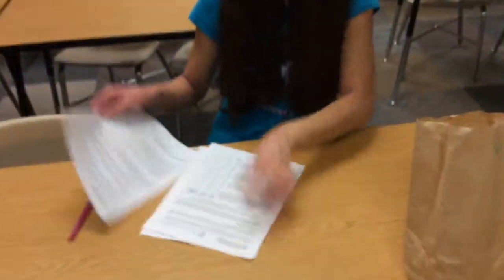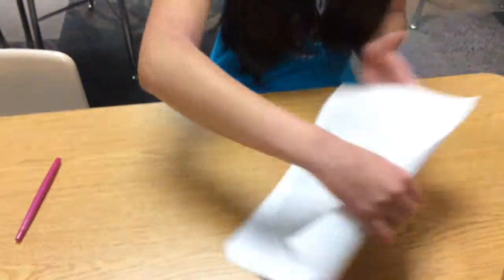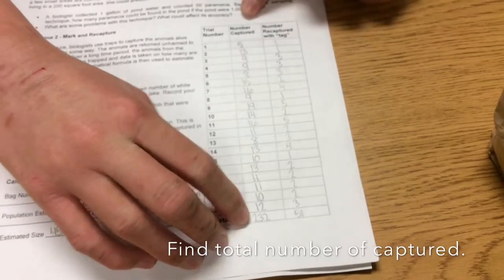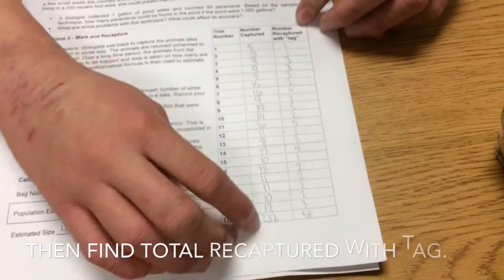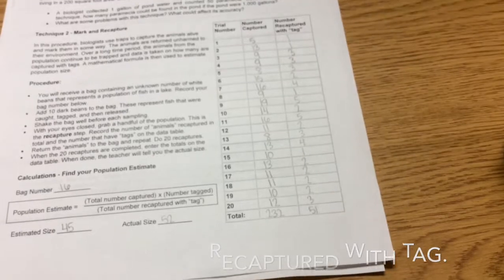So we have a student who did that for us already. What you'll need to do is add up the total number captured and then the total number recaptured with a tag after you've done your 20 trials.